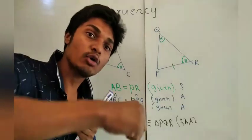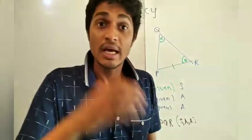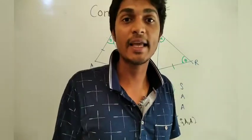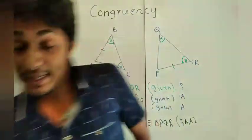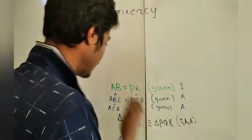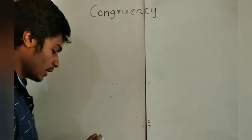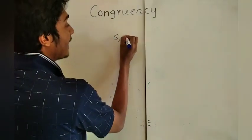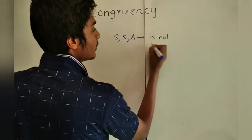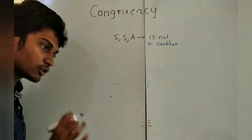So we have now learned: Side-Side-Side, Side-Included-Angle-Side, and Side-Angle-Angle. The next condition is Right Angle Hypotenuse Side (RHS). But before that, recall from the last video: we said that Side-Side-Angle (SSA) is NOT a condition for congruency. I want everyone to pay very careful attention to this.